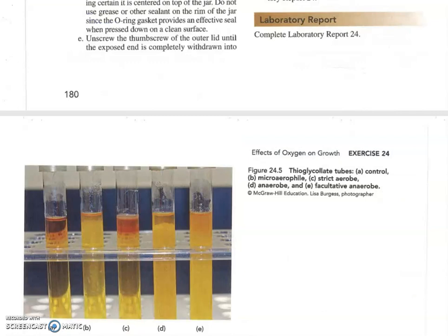Here are the expected results for the fluid thioglycolate tubes. Again, that's a liquid medium. It stays liquid. It has chemicals inside that provide an anaerobic environment. Just on the very top, you can always see that it turns kind of orange-reddish. And that is because once the medium gets exposed to oxygen, there's an indicator and it turns it red.